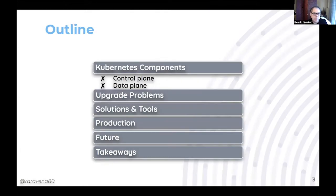Here's what I'll be covering today. First, I'll briefly touch on the main Kubernetes components — the control plane and the data plane. Then I'll talk about some upgrade problems you may encounter, followed by open source solutions and tools. I'll show what this looks like in production, discuss the future of these tools, and finally provide some takeaways.